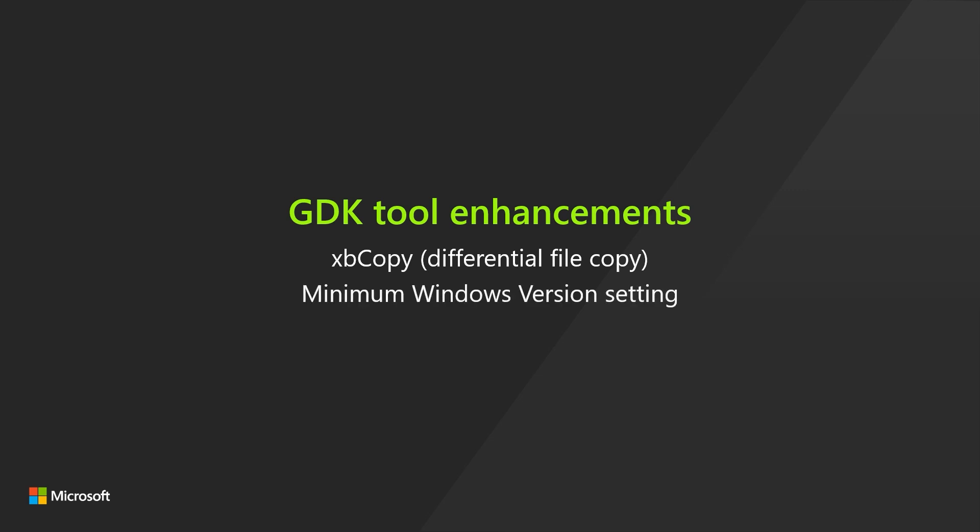Minimum Windows Version Setting: Developers can now define a minimum Windows version in Microsoft Game.config. The new Windows OS version element in this config file allows developers to specify required, suggested, and recommended versions of Windows for MSIX VC packages, ensuring compatibility and optimization across various Windows environments.